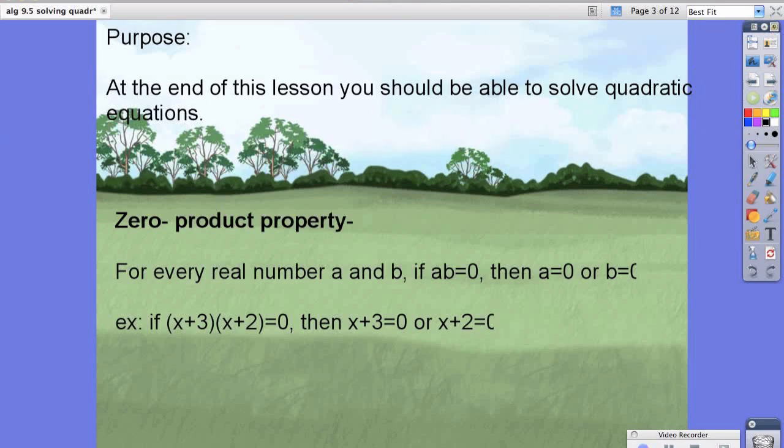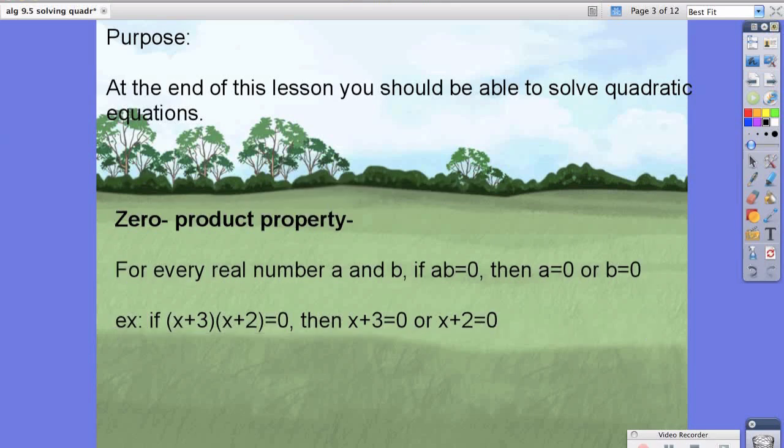The zero product property states that for every real number a and b, if ab equals 0, then a equals 0 or b equals 0. For example, if we have the quantity x plus 3 times the quantity x plus 2 equals 0, then that means x plus 3 has to be 0, or x plus 2 has to be 0, because 0 times any number should be equal to 0.